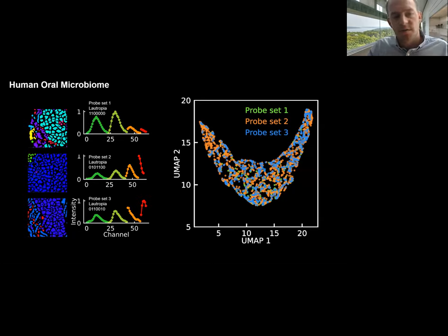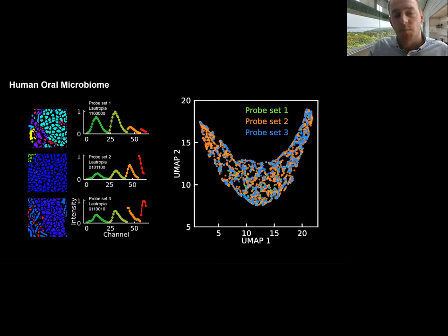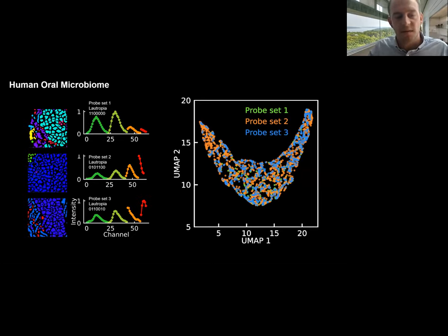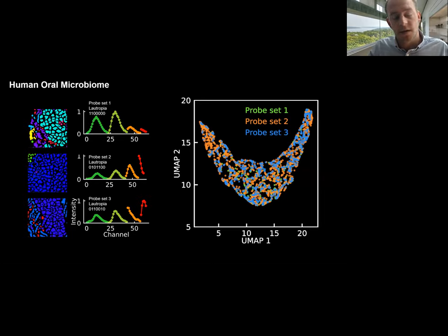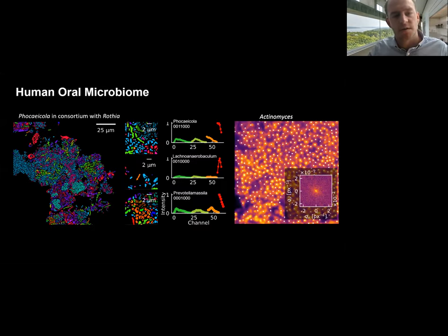As further validation, we specifically looked at Lautropia cells because they're easy to recognize — they form pleomorphic coccoid structures. We designed different panels that probe the community with different barcodes assigned to each species. In each case, the segmentation and barcode assignment appears correct based on the recognizable morphology of these cells. We also studied the mechanical properties of these cells across different probe sets and found them very similar, giving further confidence in the technique.